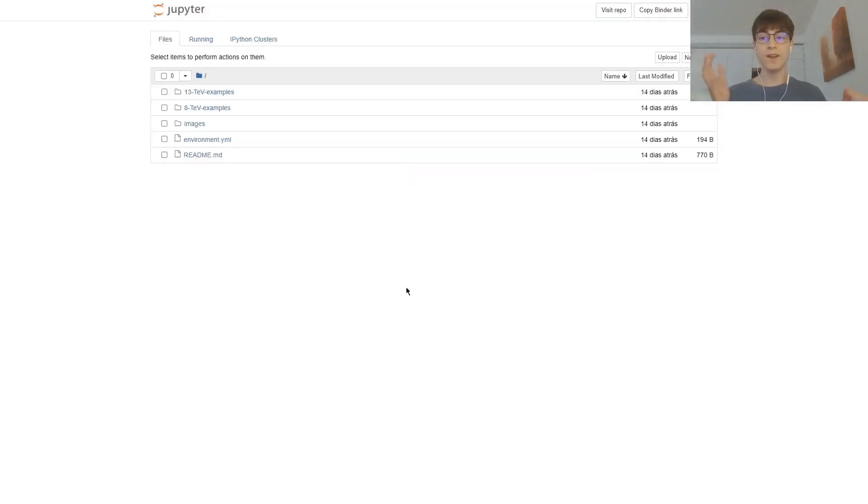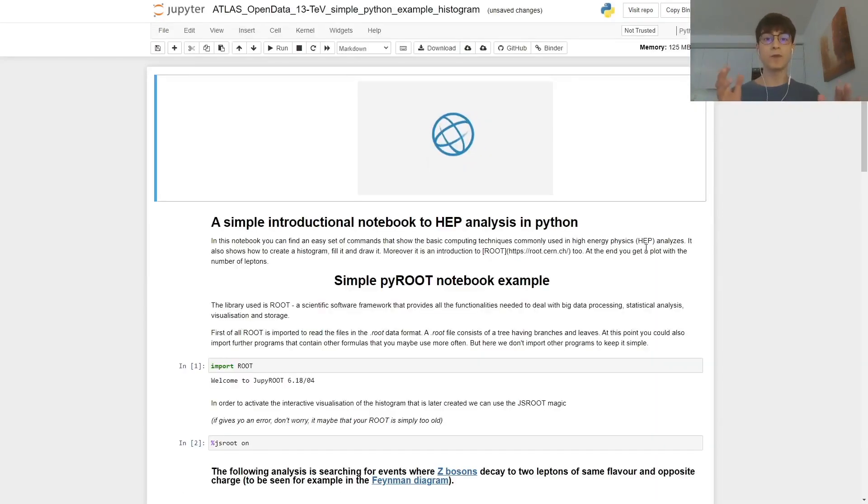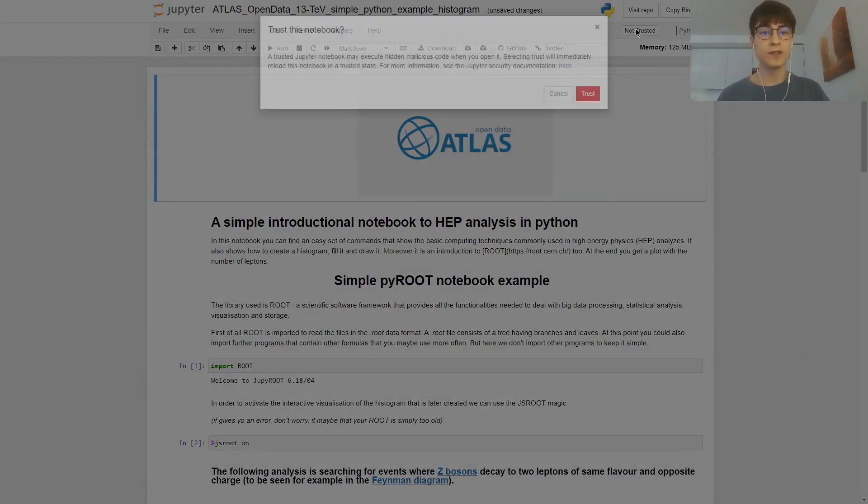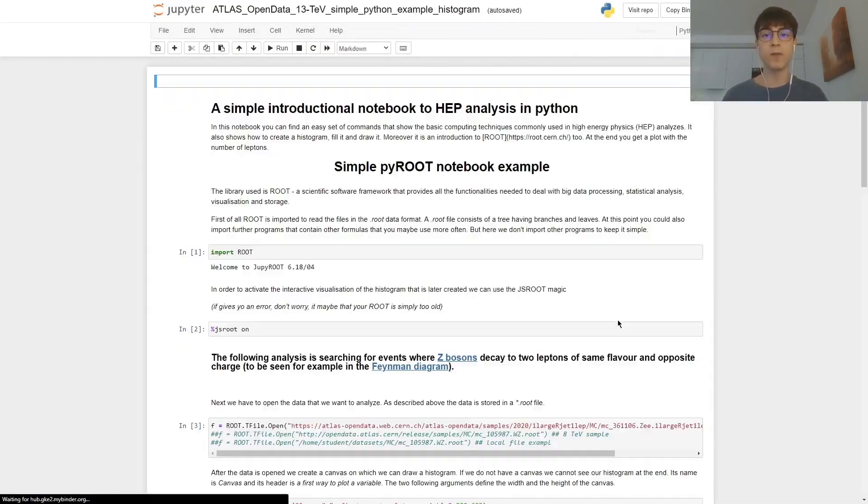Once loaded, we'll click on the 13 tera electron volts examples. Then we click in Python for the PyRoot analysis, and then we go to the fourth notebook, simple Python example histogram. After it loads, we're going to click on not trusted, and then trust so that all of the plots can properly work.